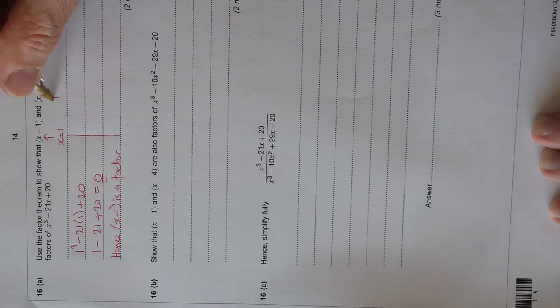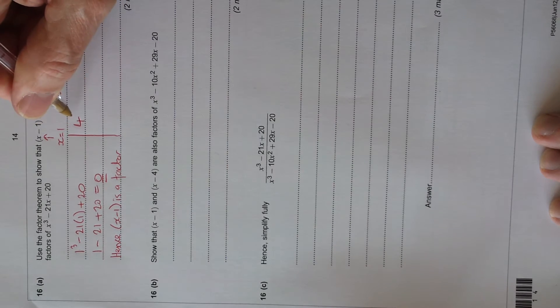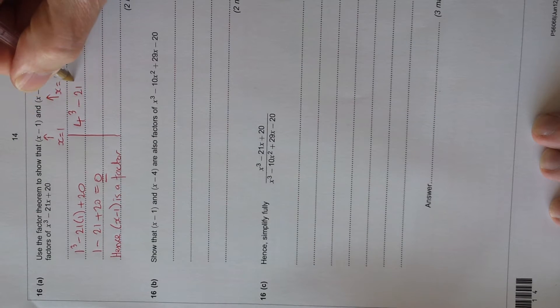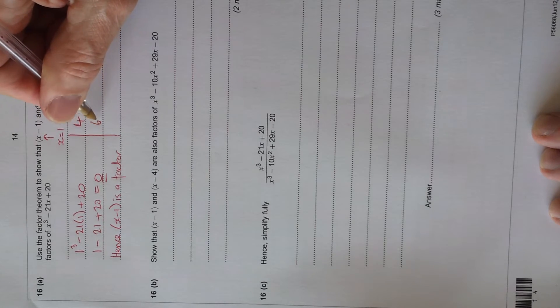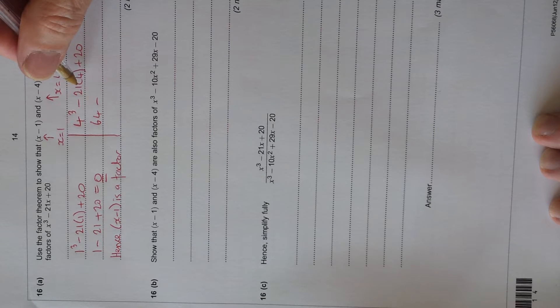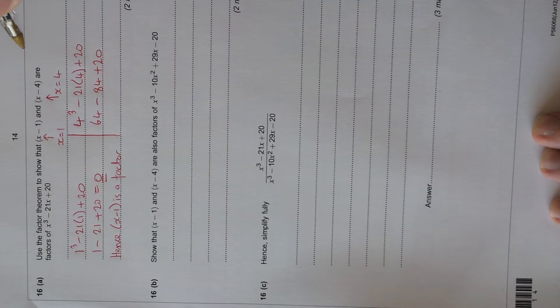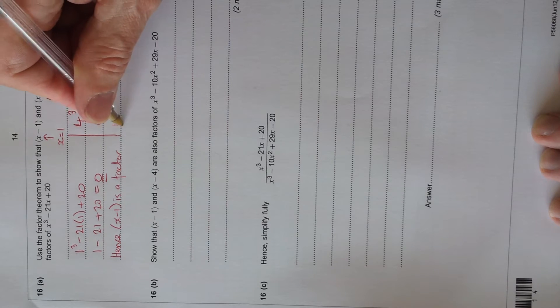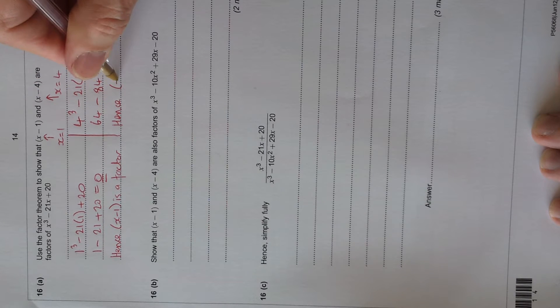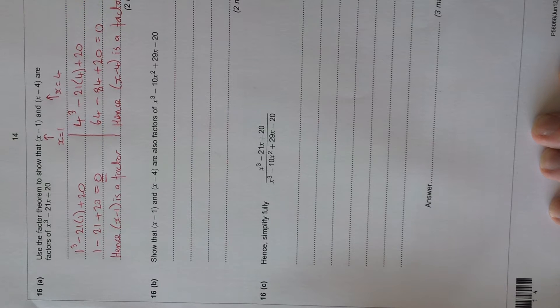Let's try this one. If x minus 4 is a factor, x must equal 4. And then we should get 0 again. 4 cubed, minus 21 times 4 plus 20. 64 for 4 cubed minus 21, double it and double it again, 42, 84, plus 20. So we've got 64 plus 20 is 84, minus 84 equals 0. So hence, x minus 4 is a factor. And that's that part done.